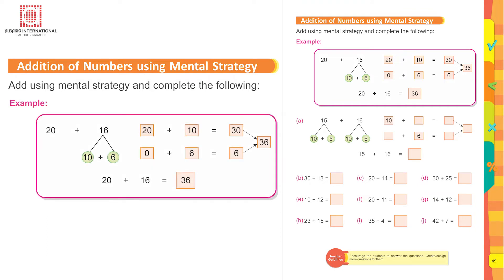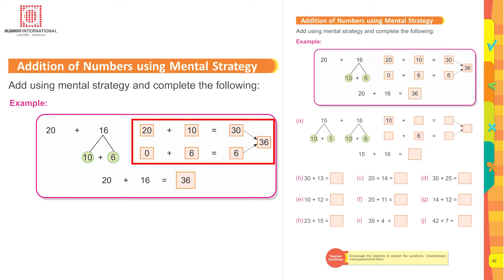20 plus 16. First we have to split the number into tens and ones. 20 does not need to be split. Split 16 into tens and ones: there are six ones and one ten. 20 plus one ten is 30. 30 plus six is 36.